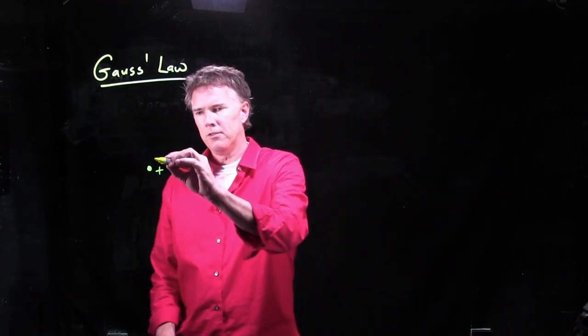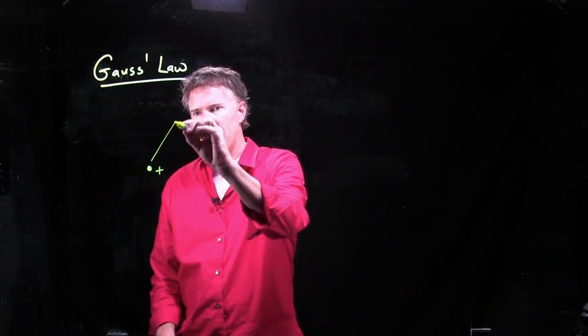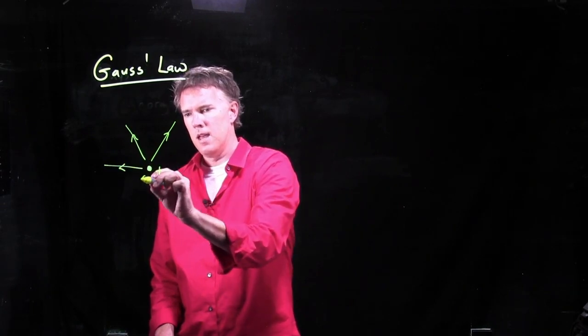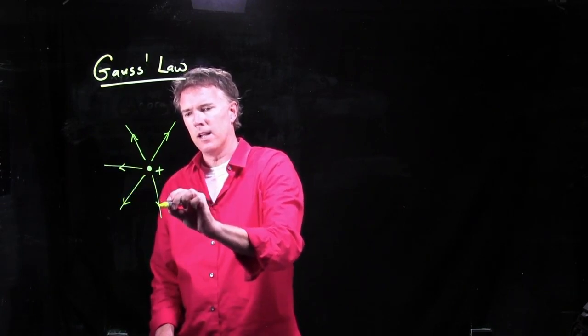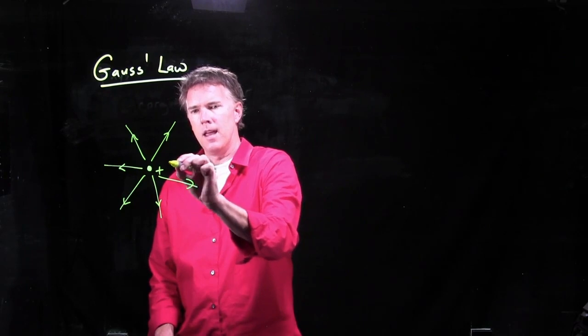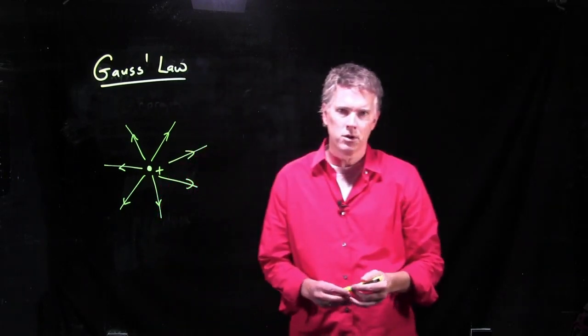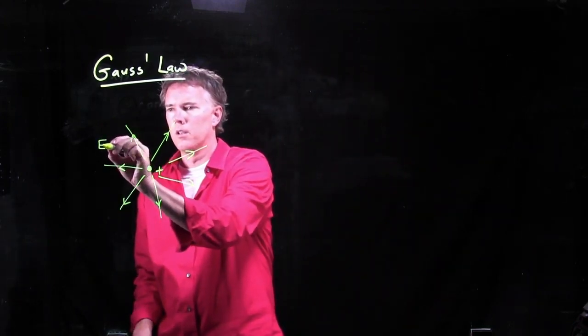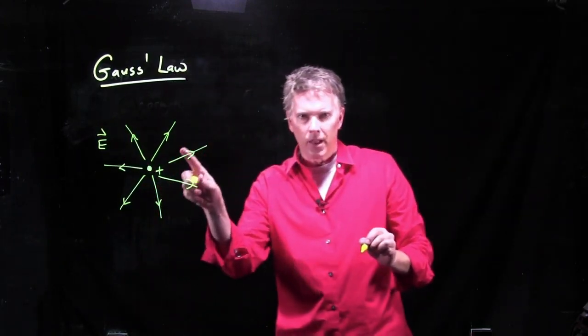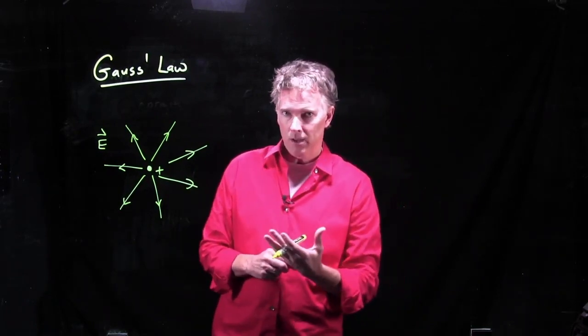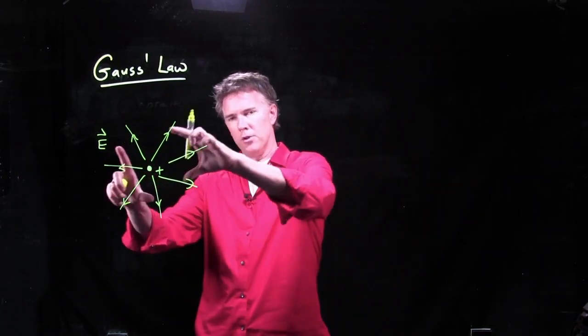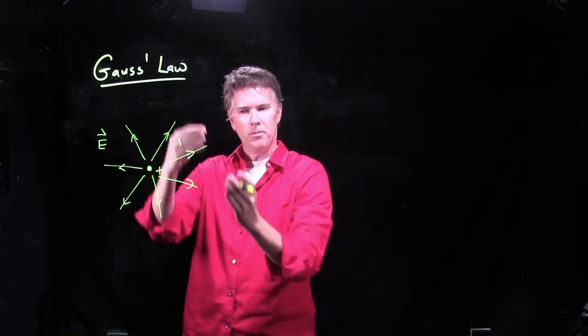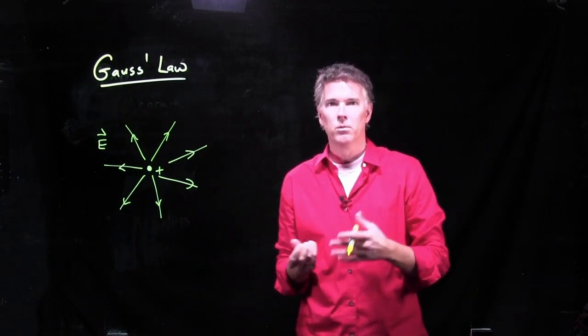Well, you already know the answer, right? It sort of points everywhere away from the point charge, and it gets weaker as you go out. If we draw it with this picture, the arrows indicate the direction of the electric field. The density of the lines indicates the strength of the electric field. As you go out further, the density of the lines goes down, the lines get further apart, and so the electric field gets weaker.